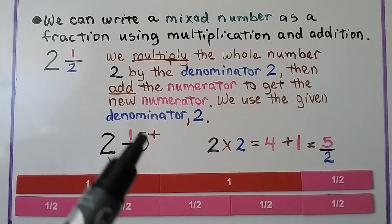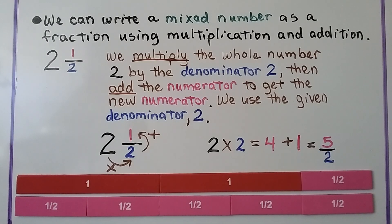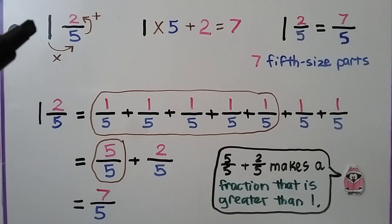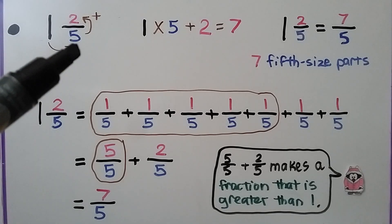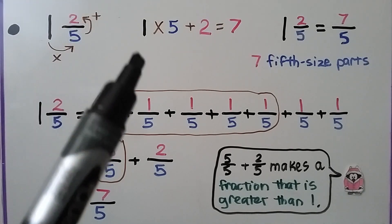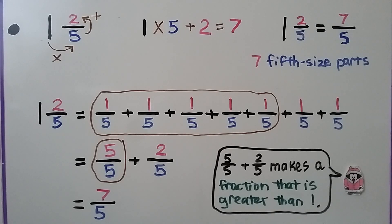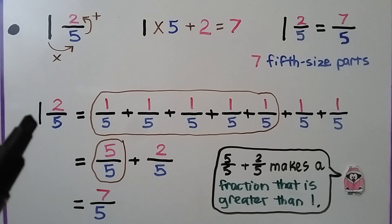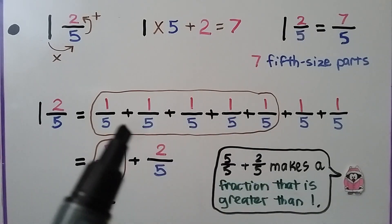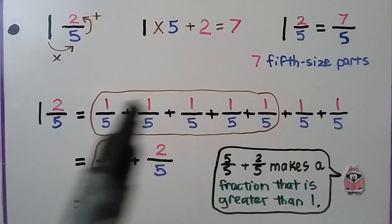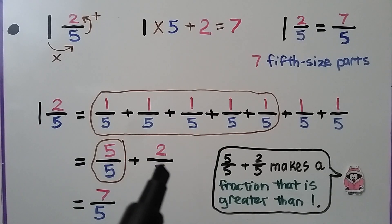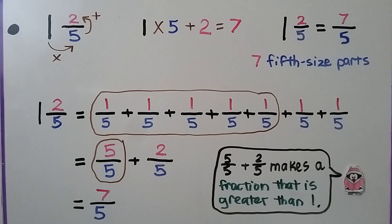We multiply, then add the numerator to get the new numerator. Our mixed number is one and two fifths. We multiply the whole number by the denominator: one times five, then add the numerator two. One times five plus two is seven, and we use the denominator five — we have seven fifths. One and two fifths equals seven fifths, which we can also see as five fifths (equal to one whole) plus two fifths, giving us seven fifths, a fraction greater than one.